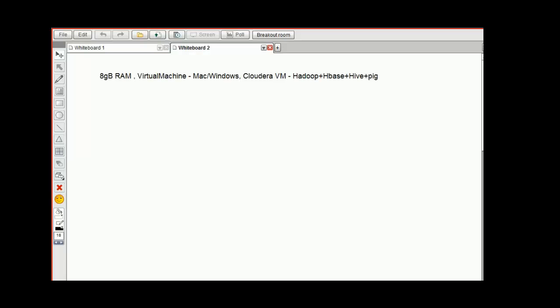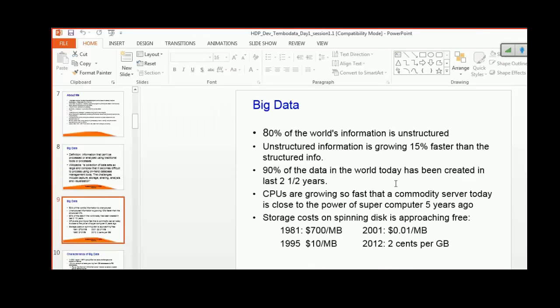80% of the world's information available today is basically unstructured, and unstructured information is growing at a rate 15% faster than structured information. Looking at data created in the world the last 2-3 years, 90% was created just in the last 2 years. CPUs are growing so fast that a commodity server today is close to the power of a supercomputer 5 years ago.